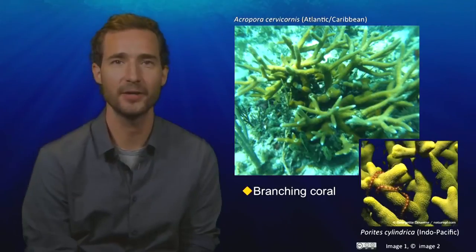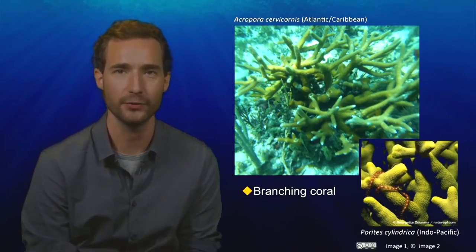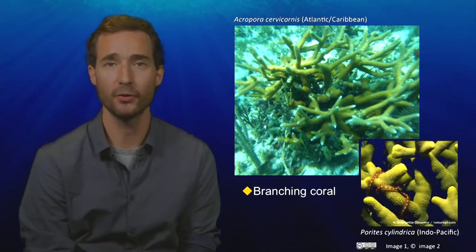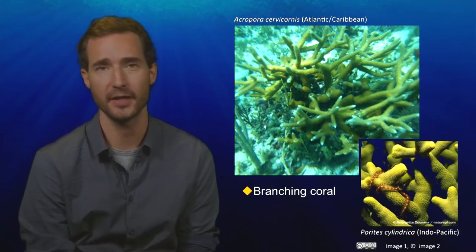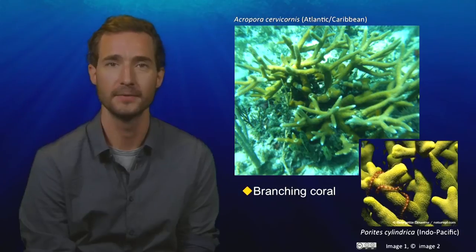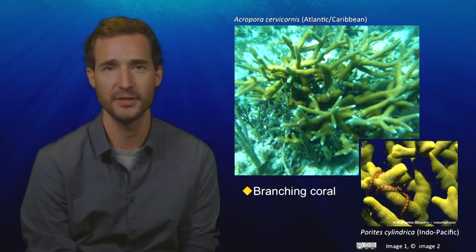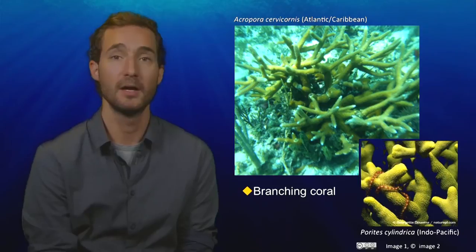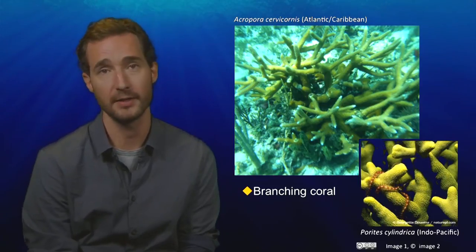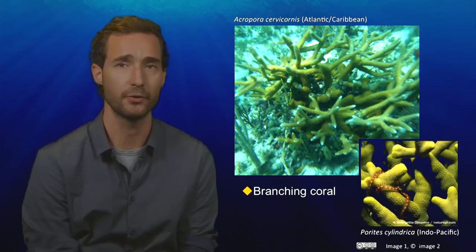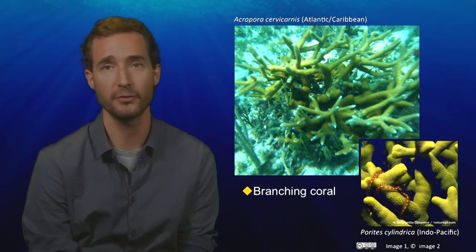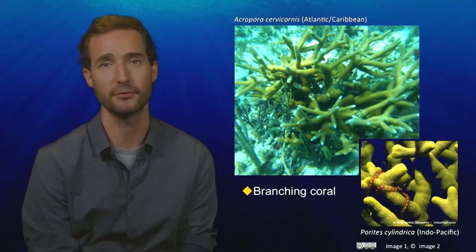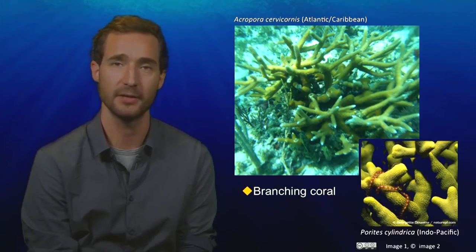Let's begin by looking at the biotic components, starting with the hard corals. This group of corals has six tentacles, giving it the scientific name Hexacorallia. Although there are hundreds of species of hard coral, many of them are very difficult to tell apart, even for a professional marine biologist. A way to simplify this complexity is to classify the types of corals based on their shapes, which we call life forms. For your final project, there are seven different life forms of hard coral that you will need to be able to recognize.